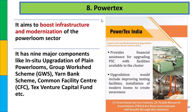अगला scheme है PowerTex. PowerTex का basic मतलब है कि जो भी power loom sector है उसको modernize करना है, उनका infrastructure boost करना है. इसमें basically 9 major components हैं जैसे: in-situ upgradation of plain power looms, group work shed scheme, yarn bank scheme, common facility center. यह power loom sectors और power loom service centers को upgrade और modernize करने के लिए grant provide करती है.